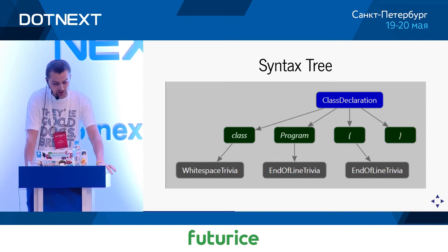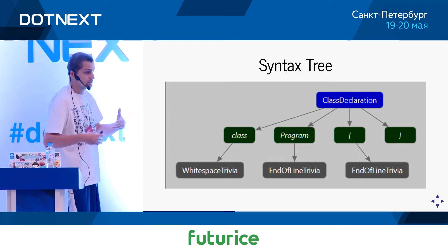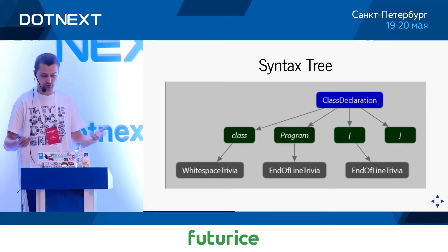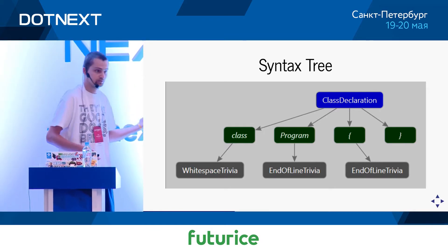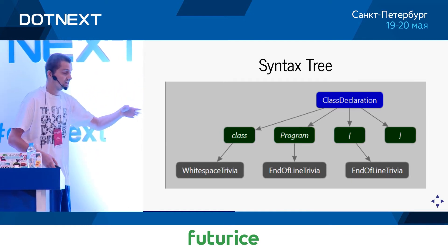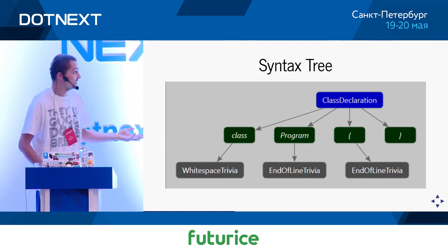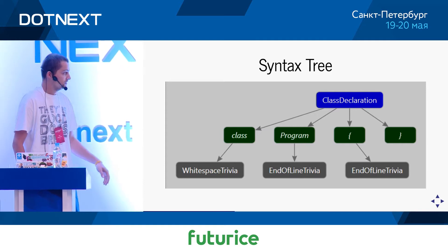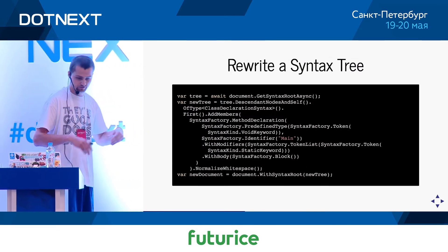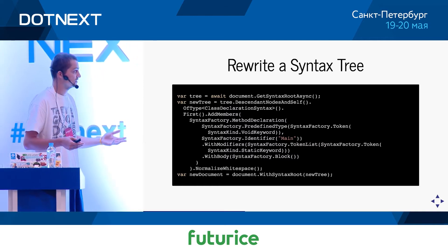Looking at this syntax tree, it's easy to conclude that in order to fix the program we started with, we would insert a new syntax node underneath the class declaration — and that's how we would fix the problem. Here is a piece of Roslyn code that does just that. It's very verbose, but very easy to comprehend. It uses the so-called syntax factory API, which is useful for generating code.